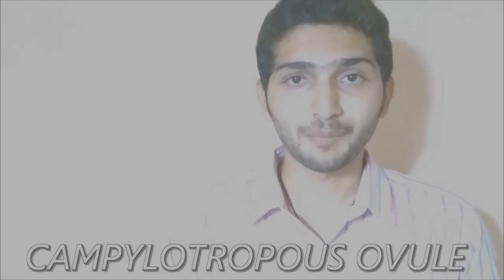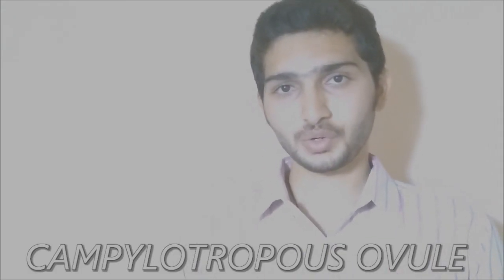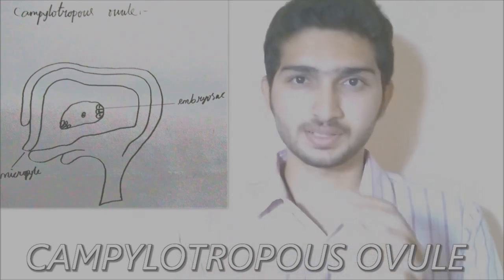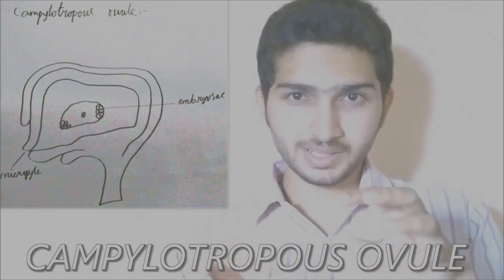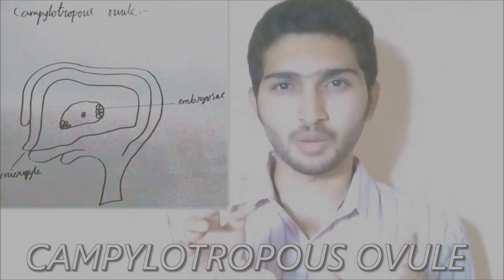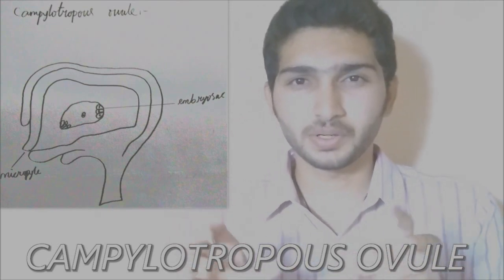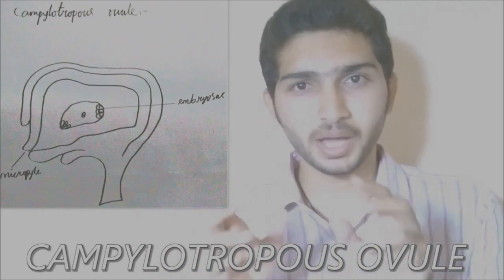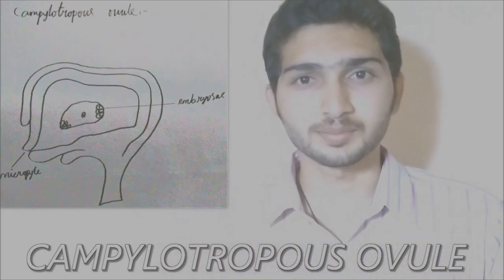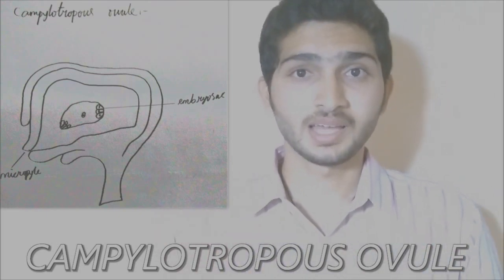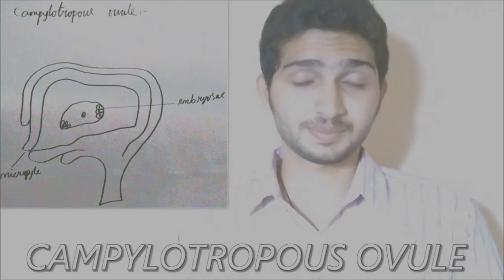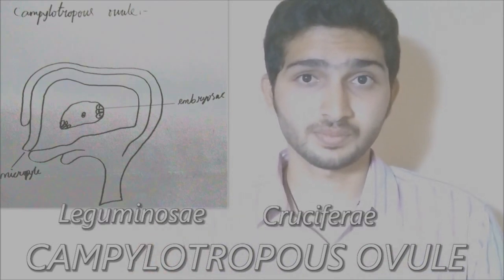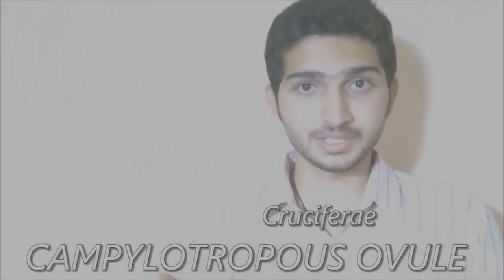Fourth one is campylotropos. In this type, the ovule is compressed and the body is slightly curved. It is placed more or less perpendicular, and the micropyle and chalaza are not placed in a straight line — they are somewhat up and down. Examples for campylotropos are Leguminosae and Cruciferae.